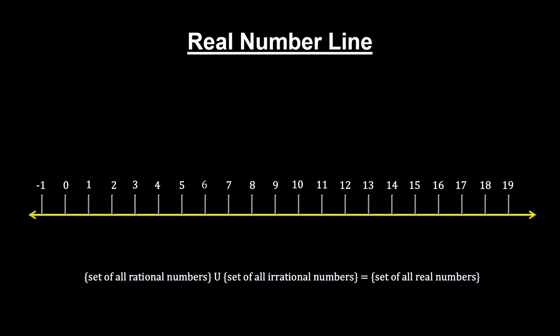But to prove the basic number properties for a number line that includes irrational numbers turned out to be quite the problem.